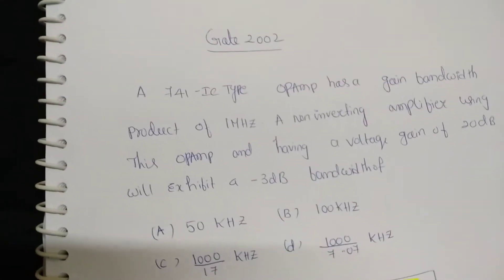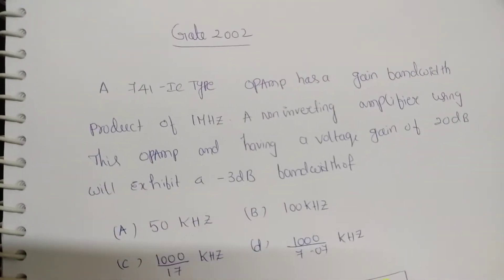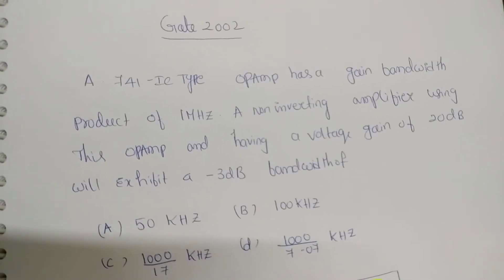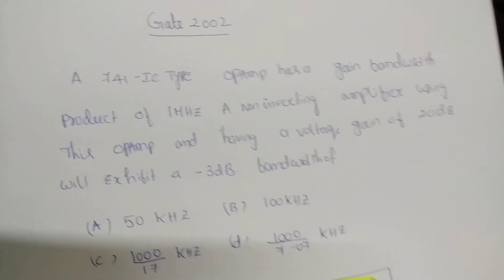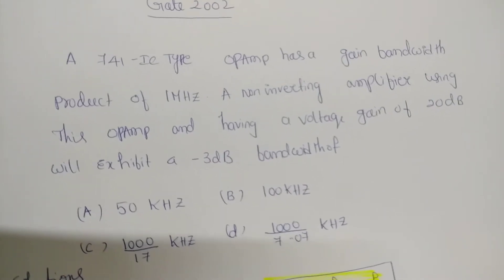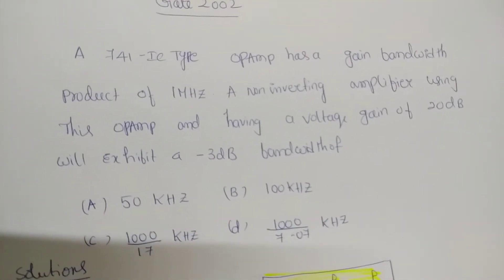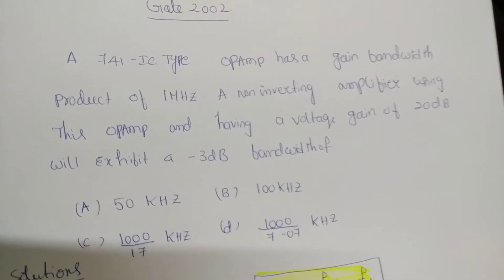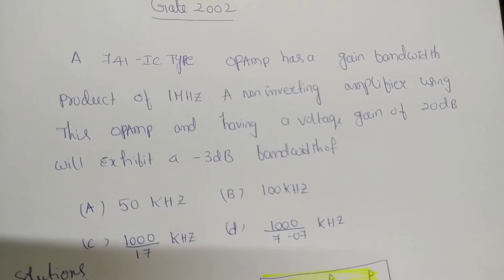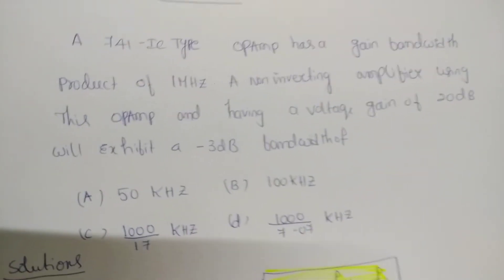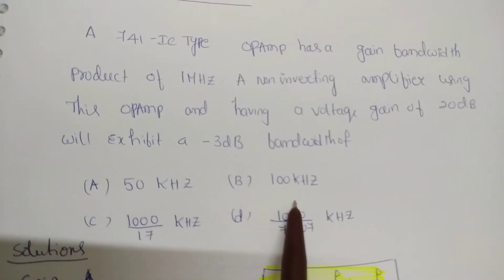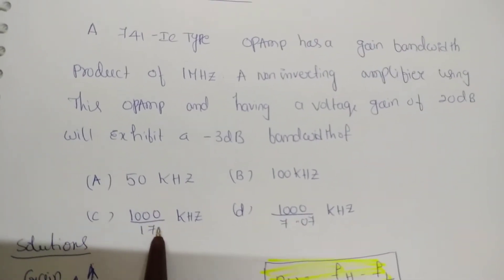Good morning. This is a GATE 2002 question. A 741 IC operational amplifier has a gain-bandwidth product of 1 megahertz. A non-inverting amplifier using this op-amp and having a voltage gain of 20 dB will exhibit a -3 dB bandwidth of — there are four options: A is 50 kilohertz, B is 100 kilohertz, C is 1000/17 kilohertz, D is 1000/7.07 kilohertz.